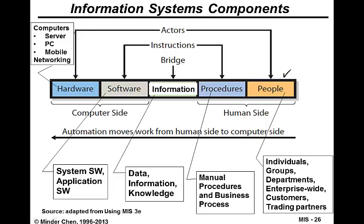Hardware may include computers and networking devices. Computers could include servers, PCs, and mobile devices. Software includes system software like operating systems, database management systems. Application software could be Microsoft Office products, accounting packages, etc.